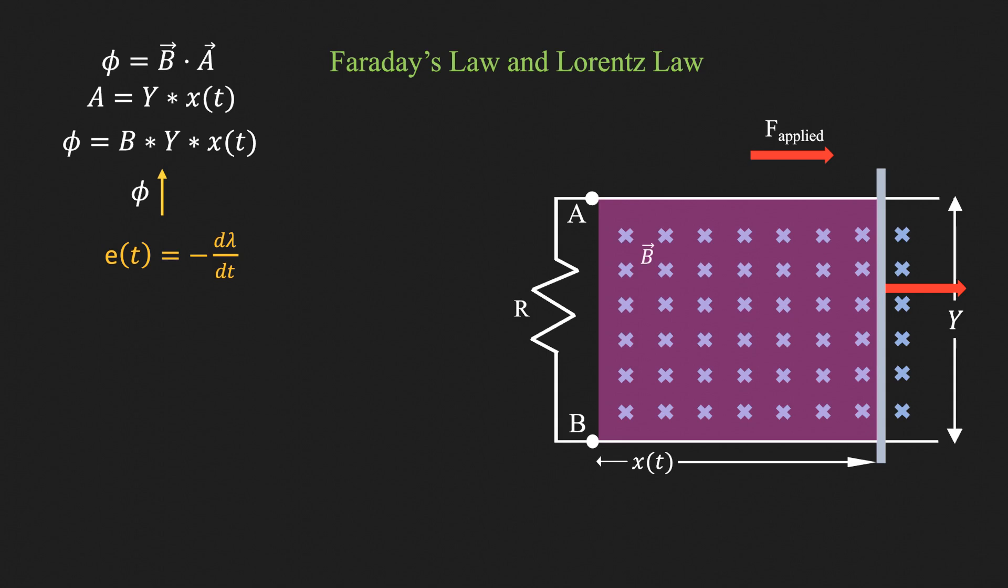Lambda is the flux linkage. In our case, it is essentially the flux enclosed by the closed loop. The magnitude of EMF is given by d/dt of B·y·x which is equal to B·y·v.